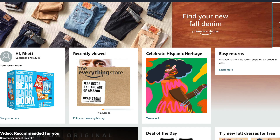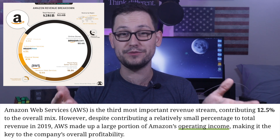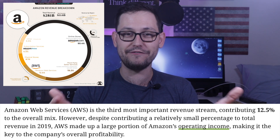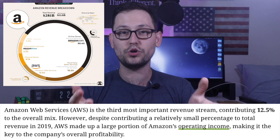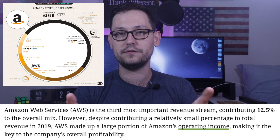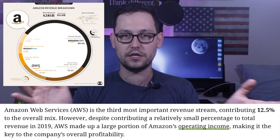Pretty much everyone knows Amazon as amazon.com, the giant e-commerce website, but not a lot of people know that AWS is actually a really significant part of Amazon's business. A large percent of the revenue — actually more than half — comes from amazon.com, which is not really a big surprise. However, there are lots of costs to operating a giant e-commerce business at that scale. So even though amazon.com generates more than half of Amazon's yearly revenue, AWS actually makes more operating income, even though it only makes up 12% of Amazon's revenue.